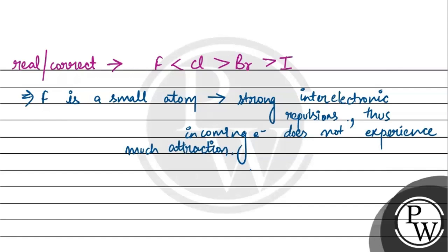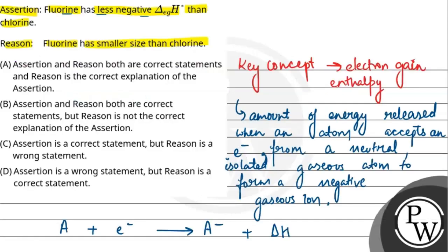Understand? So fluorine is already a small atom with many electrons showing strong inter-electronic repulsion. Now if an electron from outside tries to come in, it won't experience such strong force of attraction that it can easily enter and release a large amount of electron gain enthalpy. So the reason that fluorine has smaller size than chlorine is absolutely correct. And the answer will be option A: assertion and reason both are correct statements, and reason is the correct explanation of assertion. I hope you understood it well. Best of luck.